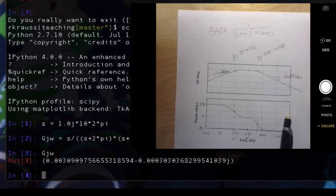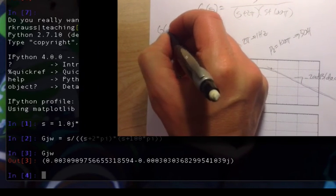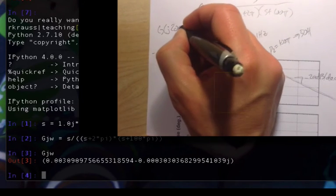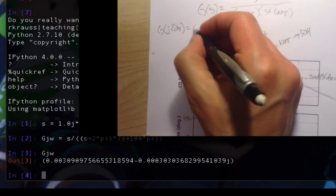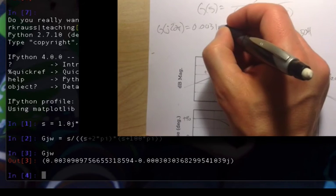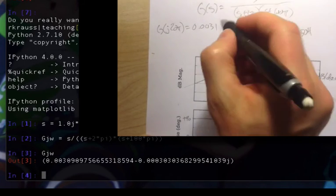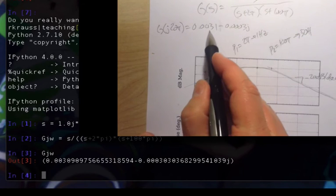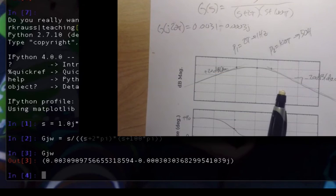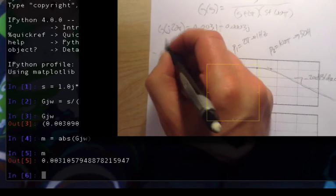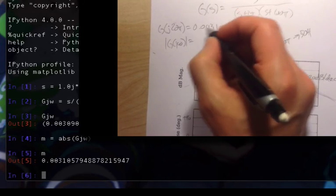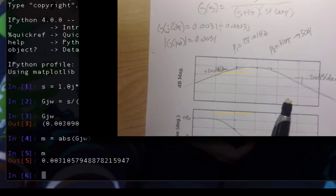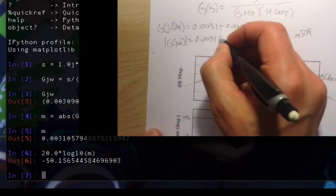I'm going to come over to Python, and I'm going to define s equal to 1.0j times 10 times 2 times π. Then my G(jω) is s divided by (s plus 2π) times (s plus 100π). I expect that to be mostly real. G of j times 20π turns out to be 0.031 in the real and minus 0.0003j. So the magnitude of the real is about 10 times the magnitude of the imaginary. The magnitude of G(jω) is equal to 0.0031, pretty much exactly the same as that.